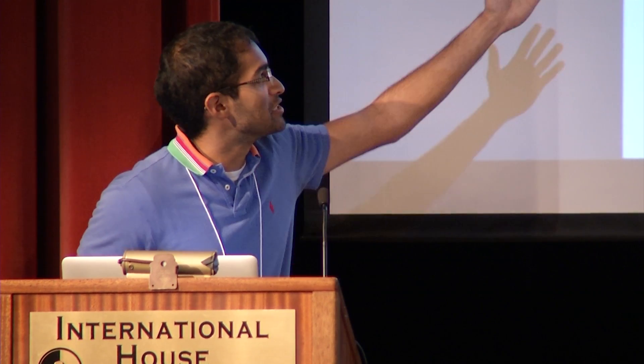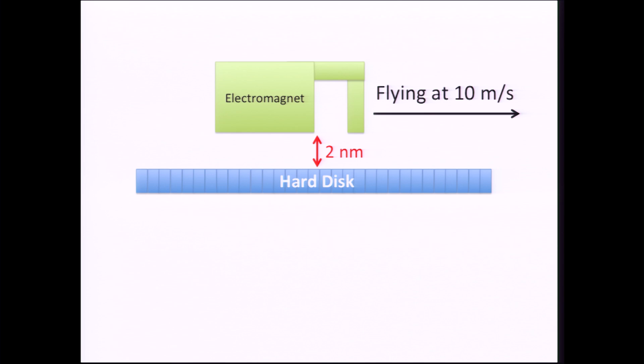And as you can imagine, this is really hard to scale. We're at 2 nanometers above the hard drive right now, flying essentially relatively as fast as the 747. You really can't shrink that anymore. Two nanometers is equivalent to 20 atoms of room between the electromagnet and the hard drive. So there's not a lot of room there.